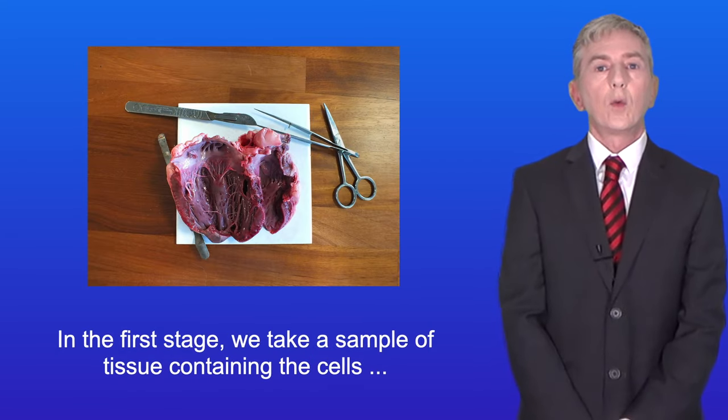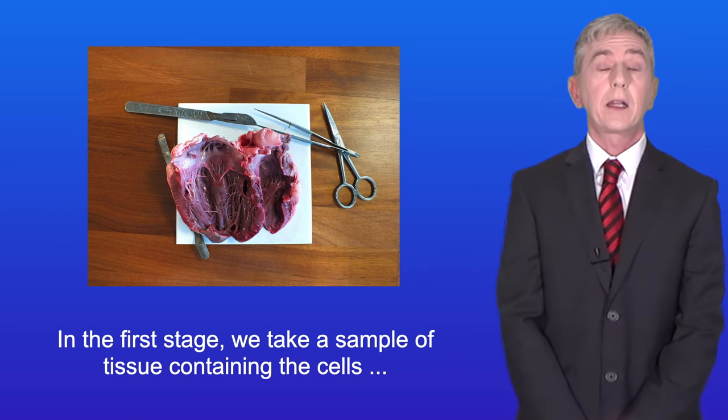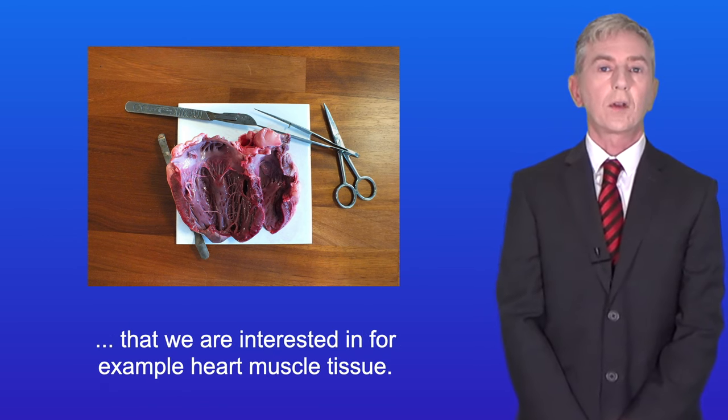In the first stage we take a sample of tissue containing the cells that we're interested in, for example heart muscle tissue.